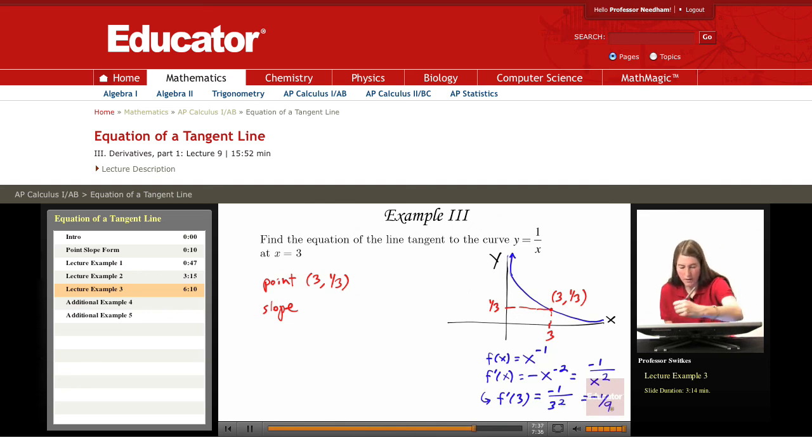So our slope value is going to be negative 1 ninth. I like to do quick checks just throughout the problem to make sure things look good. And notice that this tangent line that I've now drawn in clearly has a negative slope. It's a decreasing function. And so the negative 1 ninth looks good.